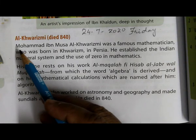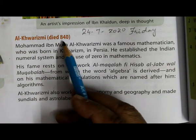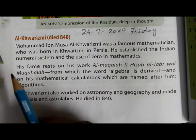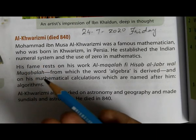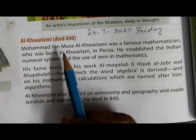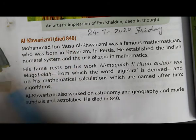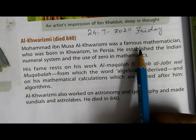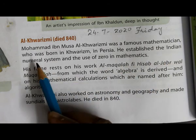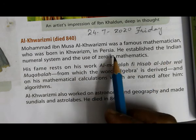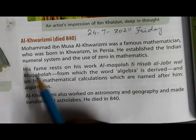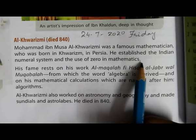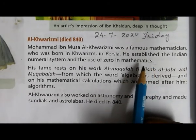Our next mathematician is Al-Khwarizmi, who died in 840. Note that 840 is his year of death, not birth. Muhammad ibn Musa Al-Khwarizmi was a famous mathematician who was born in Khwarizm in Persia. He established the Indian numeral system and the use of zero in mathematics — this is very important.